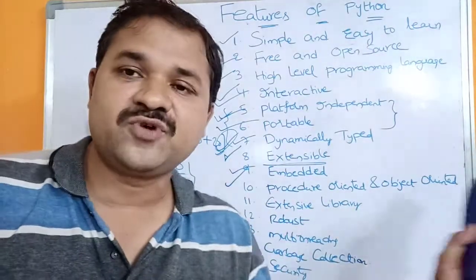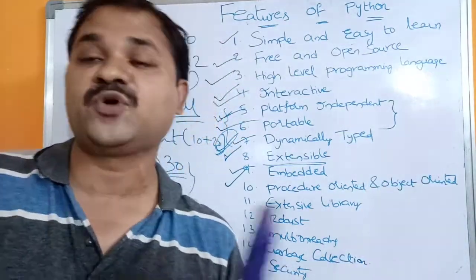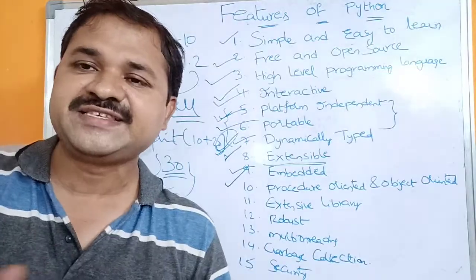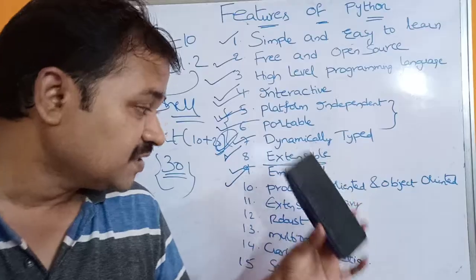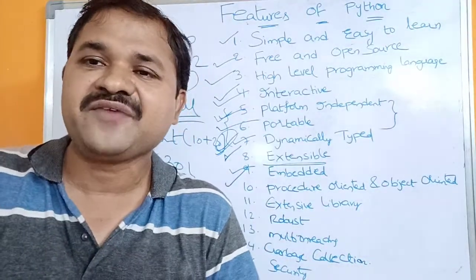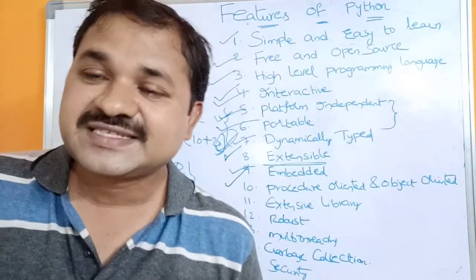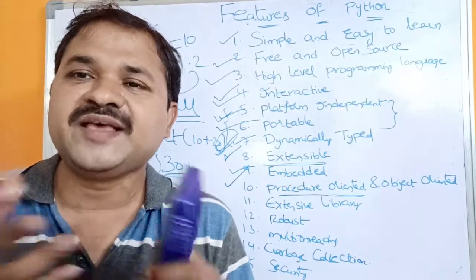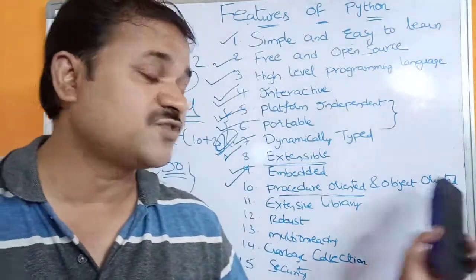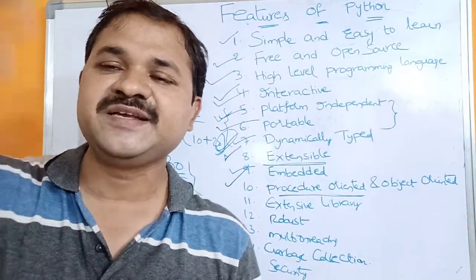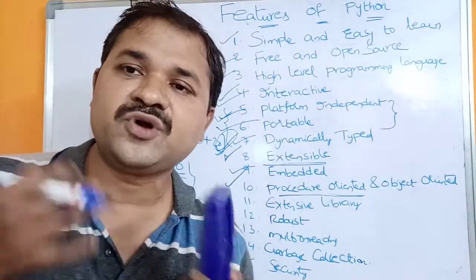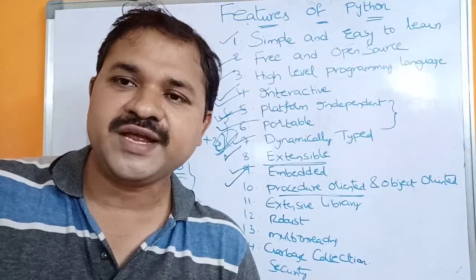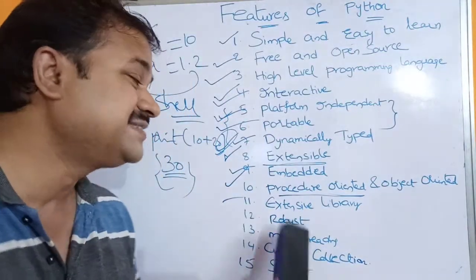The next feature is that Python is both procedure-oriented and object-oriented. C is procedure-oriented only; C++ and Java are object-oriented only; C# is object-oriented only. But Python supports procedure-oriented, object-oriented, scripting, and shell programming. Python supports all object-oriented features such as class, object, encapsulation, abstraction, inheritance, and polymorphism.